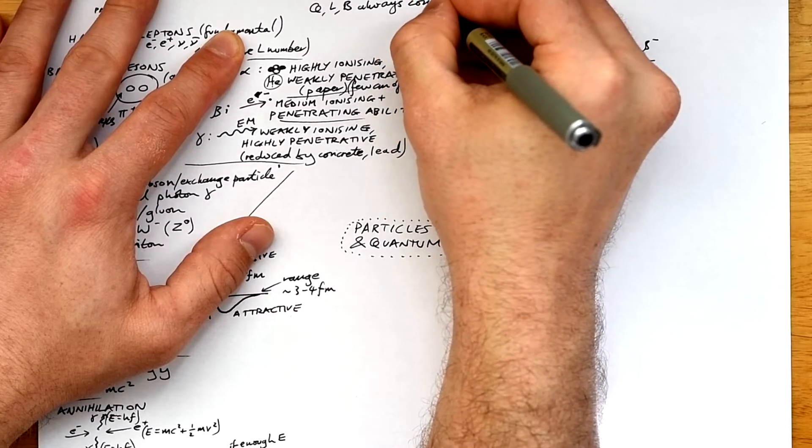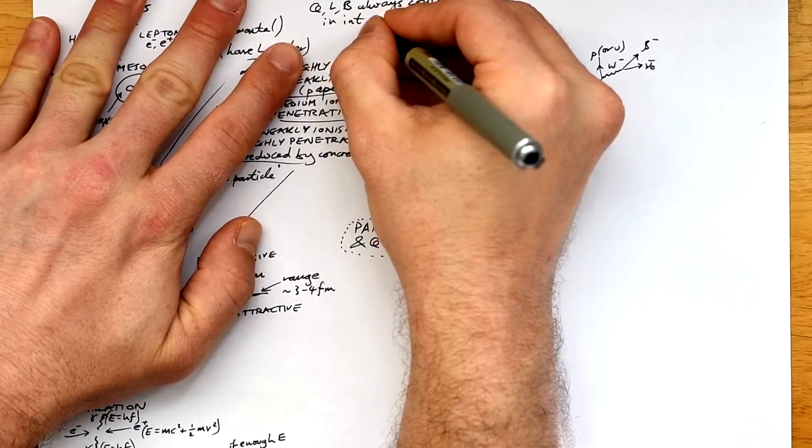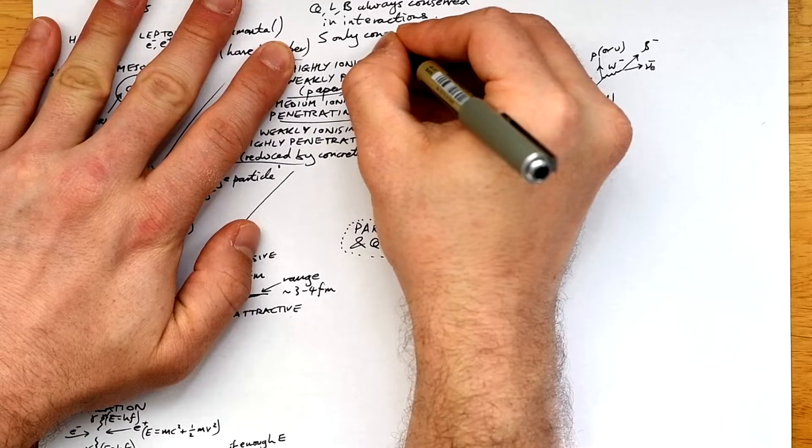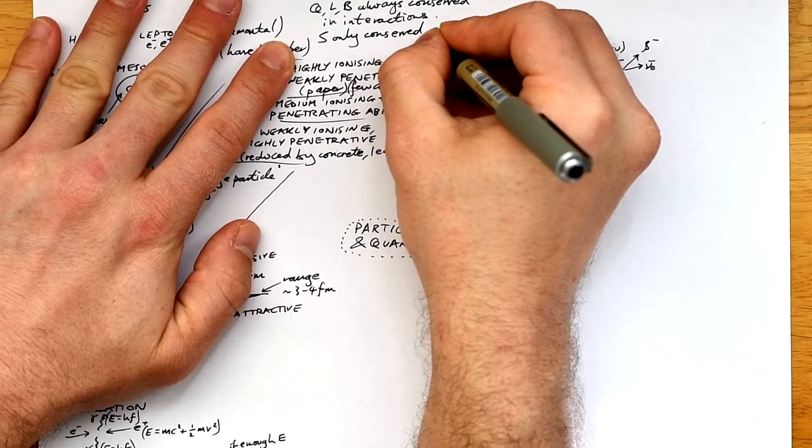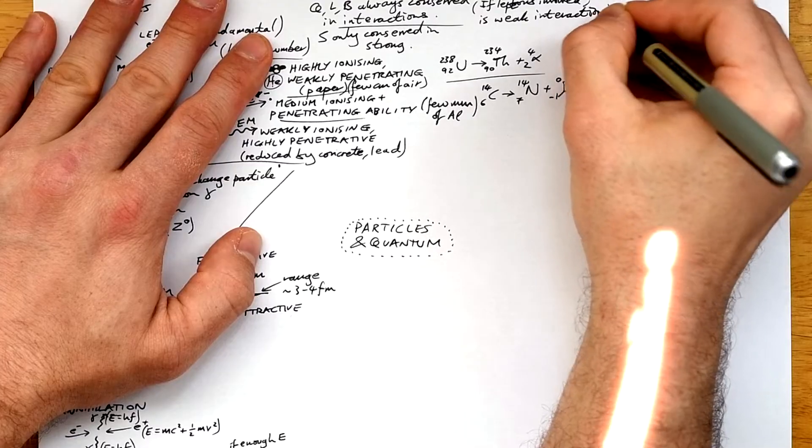Okay, conservation rules. What has to be conserved? Charge, lepton number, and baryon number, Q, L and B. They're always conserved. Strangeness, however, is only conserved in strong interactions. Incidentally, any interaction that involves leptons has to be a weak interaction.